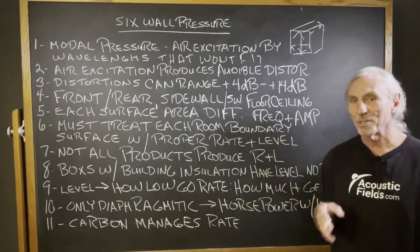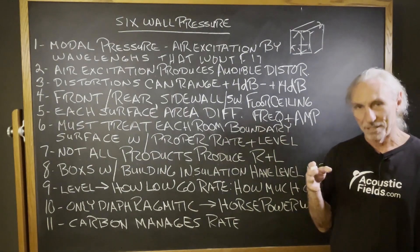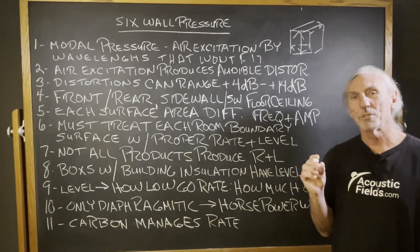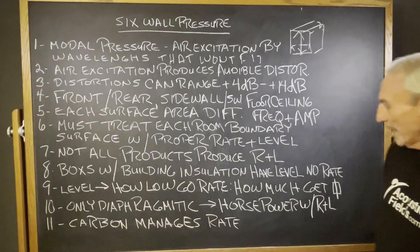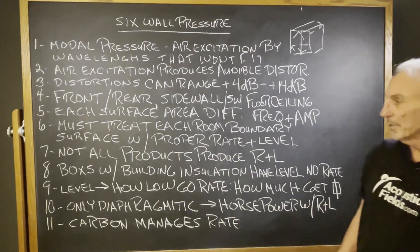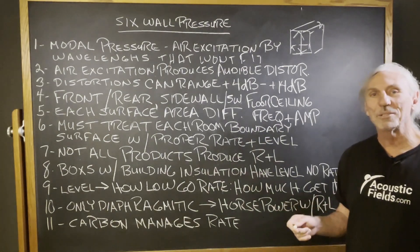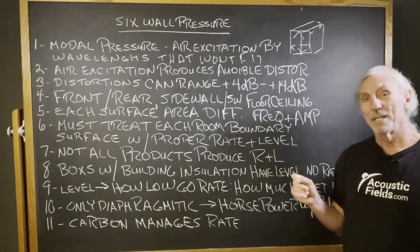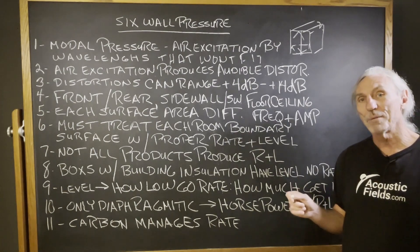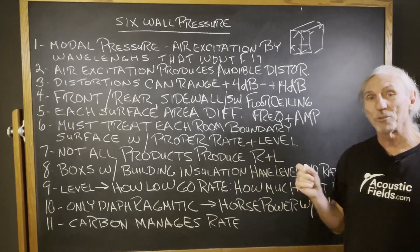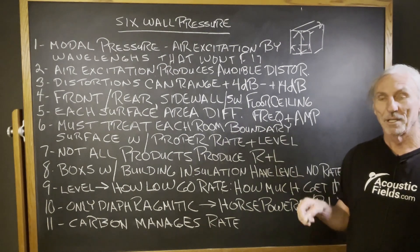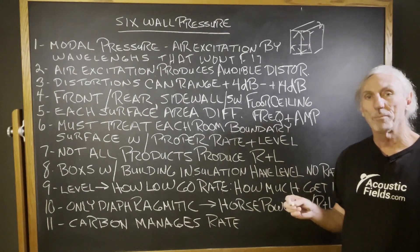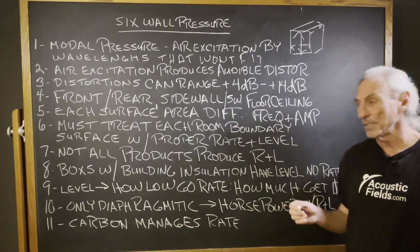The key is: how much absorption per square foot do we get for that product? You have to look at the level, but you must consider the rate. Our ACDA series delivers 35% absorption at 30 Hz, 63% at 40 Hz, and 100% at 50 Hz — huge sponges. Every 12 square feet of one unit provides about 1.5 dB of attenuation.